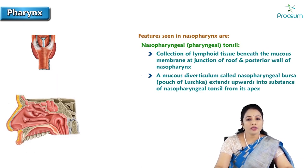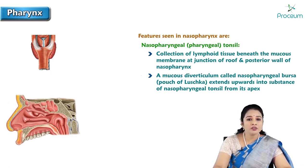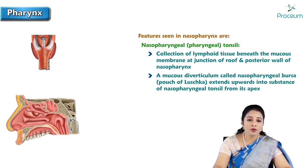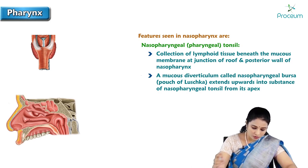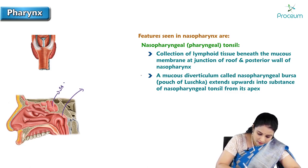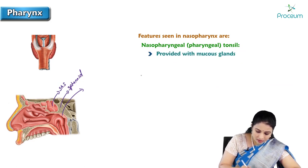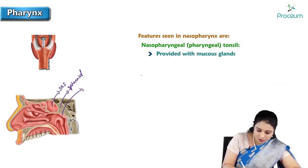Features of nasopharynx: Nasopharyngeal tonsil or pharyngeal tonsil is the collection of lymphoid tissue beneath the mucous membrane at the junction of the roof and the posterior wall of the nasopharynx. Here we can see the collection of lymphoid structure below the sphenoid. Here is the sphenoidal air sinus and the sphenoid bone. Just below the roof, we can see the nasopharyngeal tonsil.